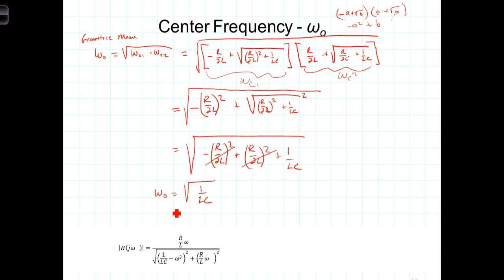Let's take this value of omega and plug it into our frequency response expression. So replacing omega here, here, and here with this square root of 1 over LC, we put it in here, we get the square root of 1 over LC,